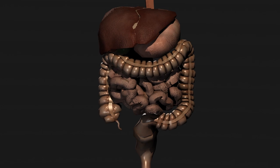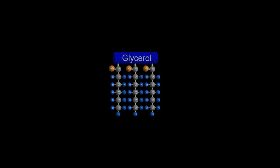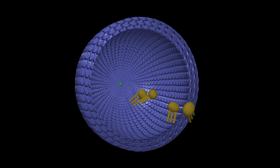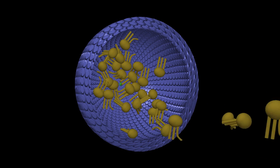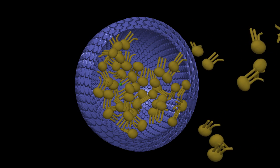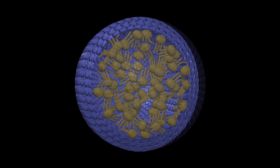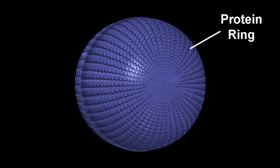Inside of the liver, these free fatty acids and monoglycerides are reassembled back into triglycerides. The triglycerides are then pushed into the transport vehicles — the lipoproteins — including the high-density lipoproteins, the low-density lipoproteins, and chylomicrons. All of these are part of the lipoprotein system with that outer ring of protein, containing fat and cholesterol on the inside.